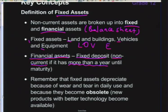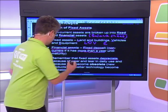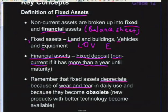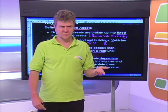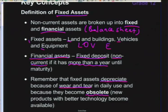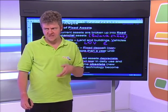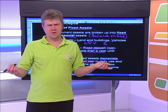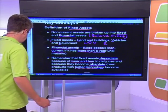Fixed assets depreciate - things get old and get used, losing their value through wear. Even a well-maintained laptop cannot be sold at its original purchase price because it has aged. Fixed assets can also become obsolete when new and better technology becomes available - for example, records gave way to cassettes, then CDs, then MP3 players. Nobody buys cassette tapes anymore because old technology has been replaced by better technology.